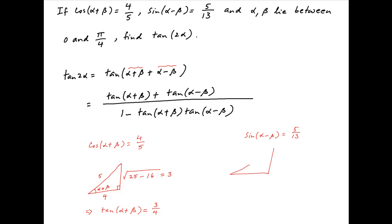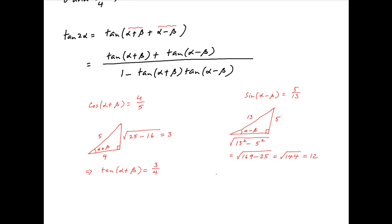We are also given that sin(α−β) = 5/13. Consider a right angle triangle where the angle between the base and the hypotenuse is (α−β). Since sin(α−β) = 5/13, the perpendicular is 5 and the hypotenuse is 13. Using Pythagoras theorem, the base is √(169−25) = 12. Therefore, tan(α−β) = 5/12.